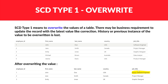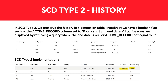We are not maintaining any kind of history here. After the update, we won't be able to know whether the previous value was 'Software Engineer' or 'IT Engineer.' A common business case for SCD Type 1 is correction — if a designation was incorrectly entered, we simply override the value.